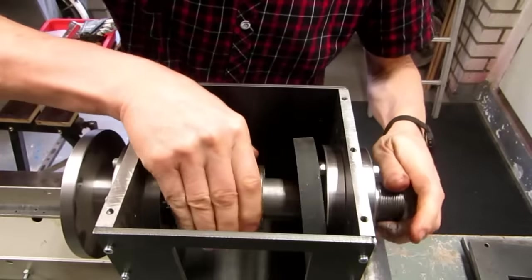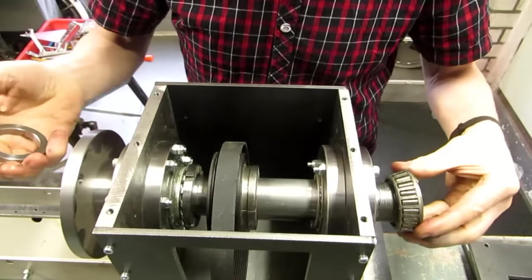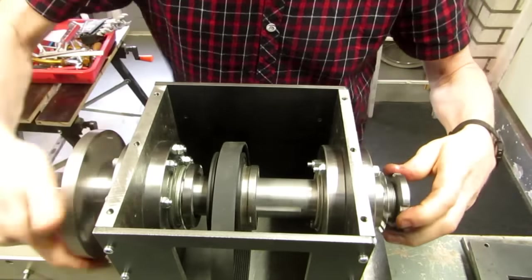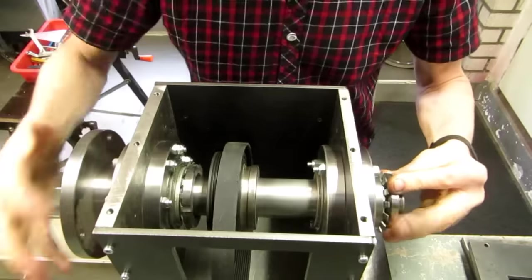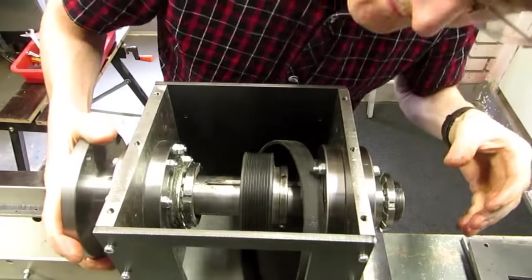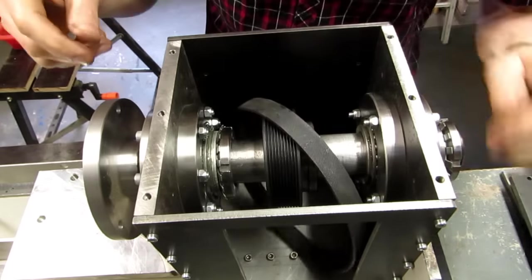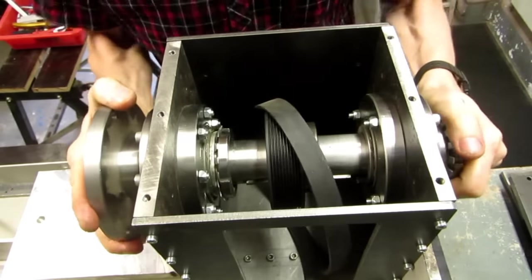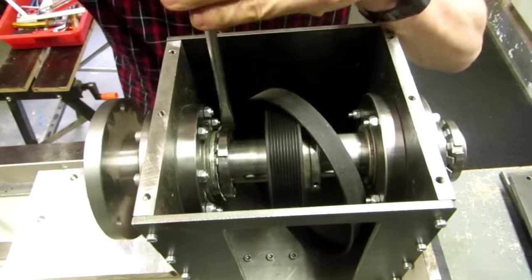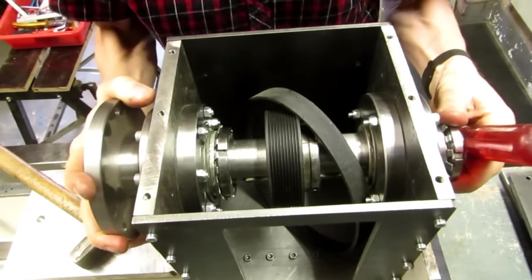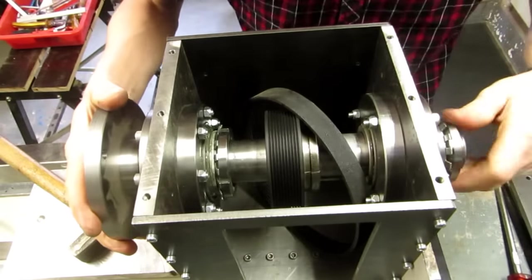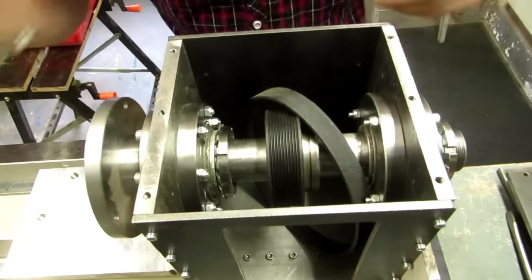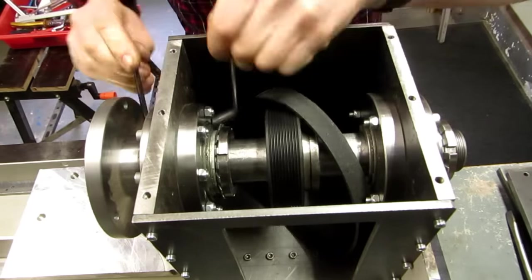After the first bearing nut is screwed on, the last taper roller bearing can be mounted with the securing ring and the bearing nut. To center the bearing outer rings, first loosen the bearing ring bolts, and then tighten the front bearing nut and then the rear bearing nut. Then the bolts of the bearing rings can be tightened.